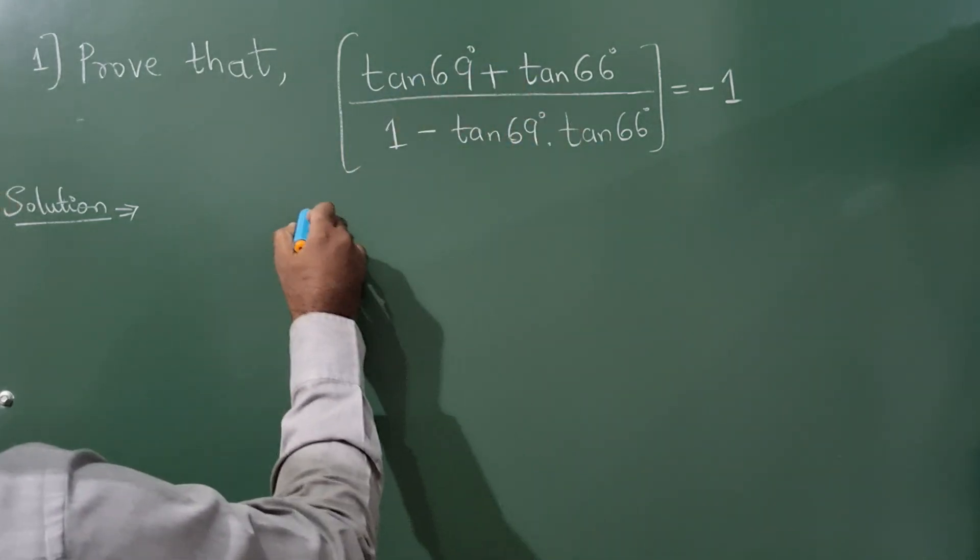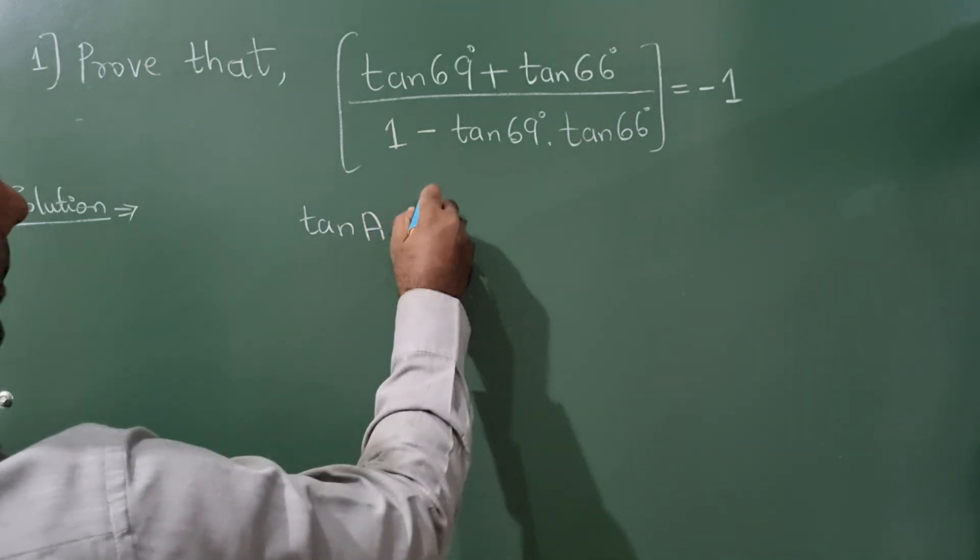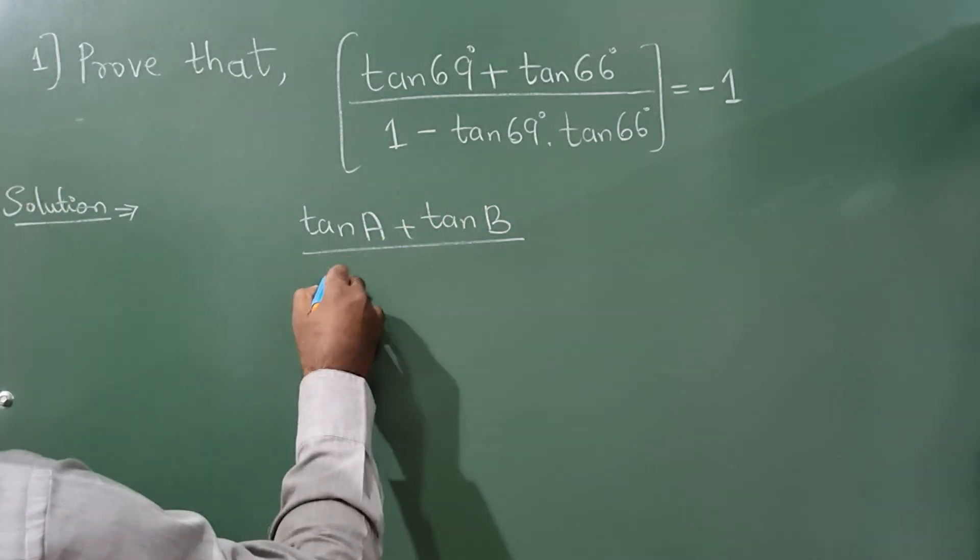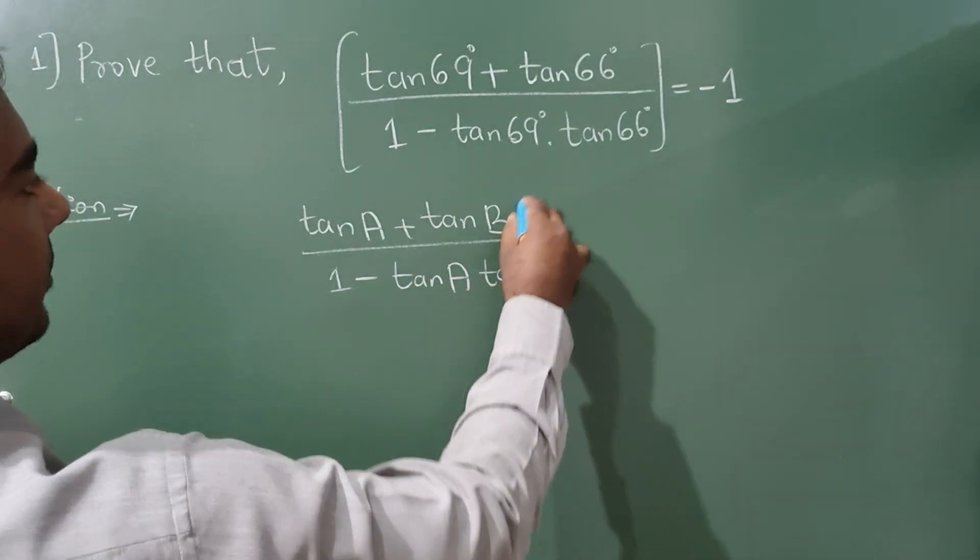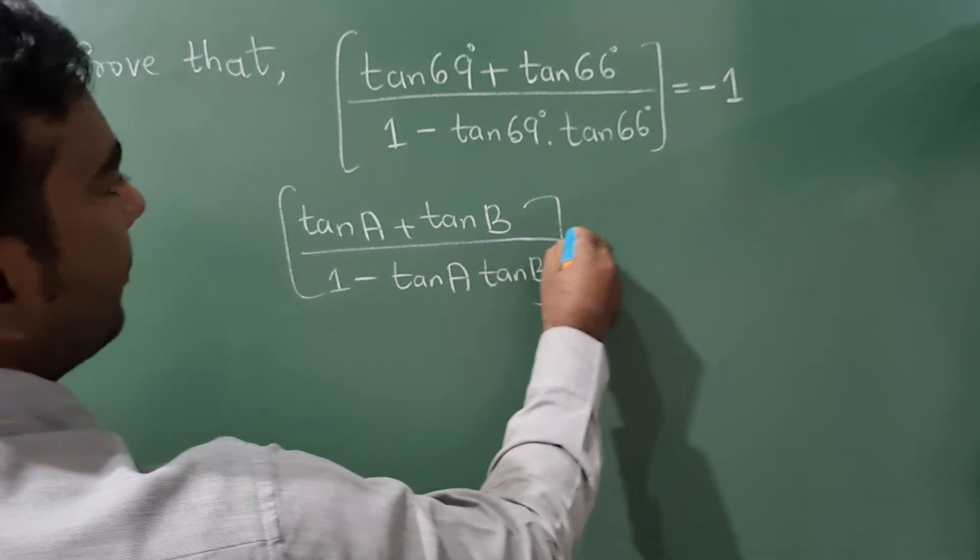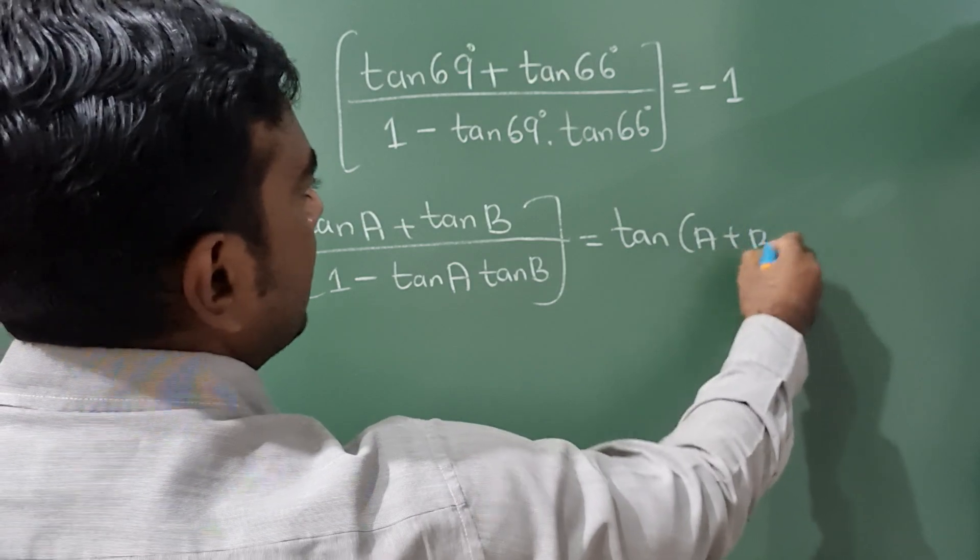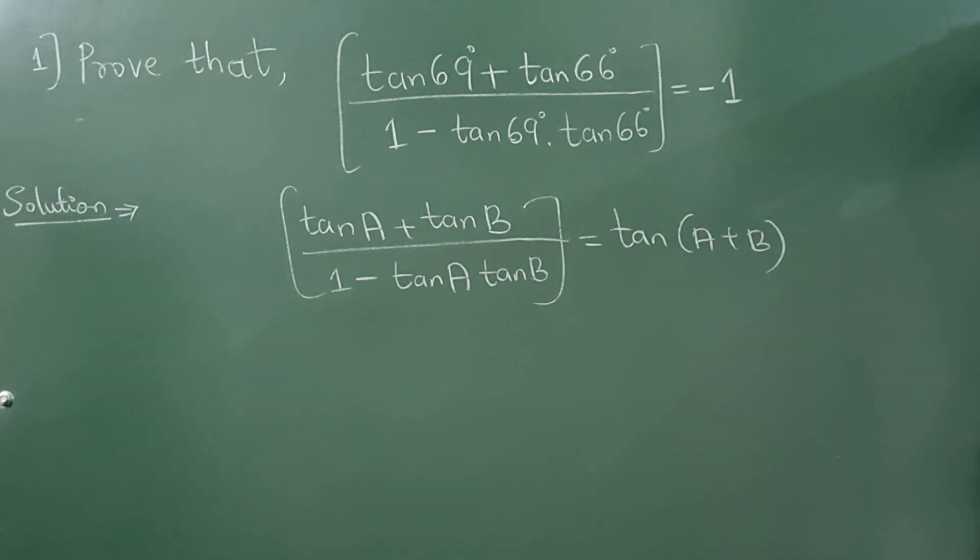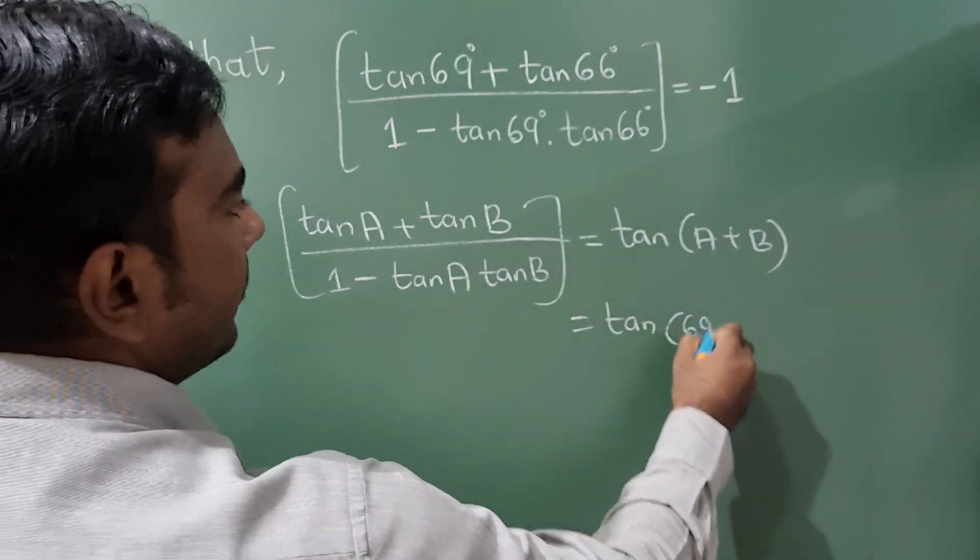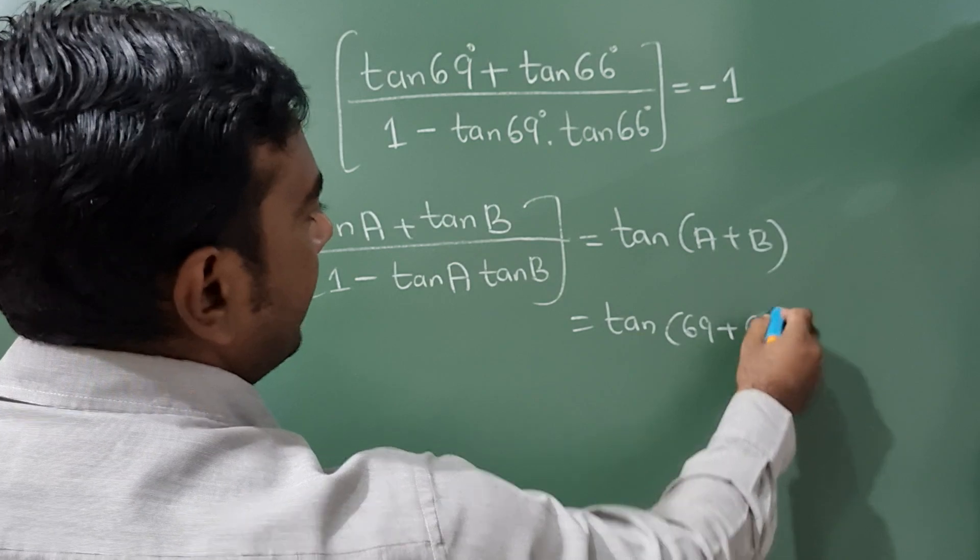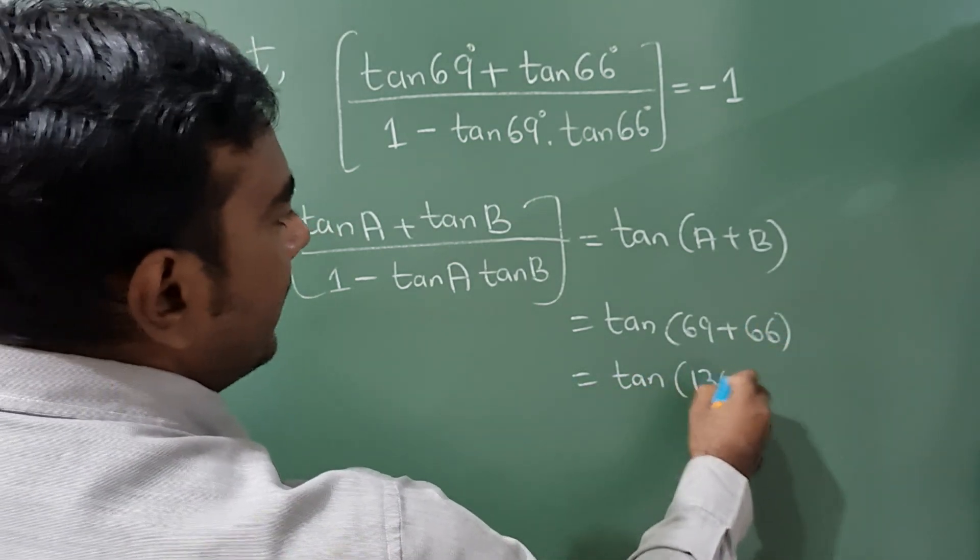There is a formula to solve this: tan A plus tan B divided by 1 minus tan A into tan B. Here A is 69° and B is 66°. If you add this, you get tan 135°.